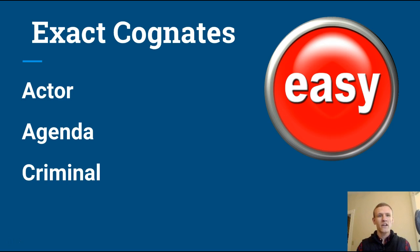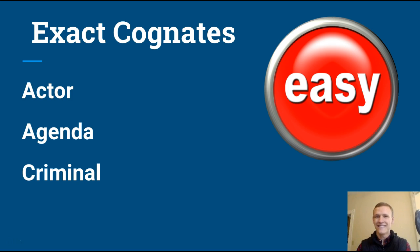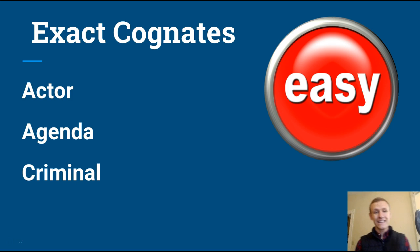I want to talk about three different types of cognates today. The first one is the easy one — I put the easy button on the side there. These are words that are literally spelled the exact same way. For example, you'll see words like actor, agenda, criminal. Everyone can know what those mean just based on the English spelling and the Spanish spelling.